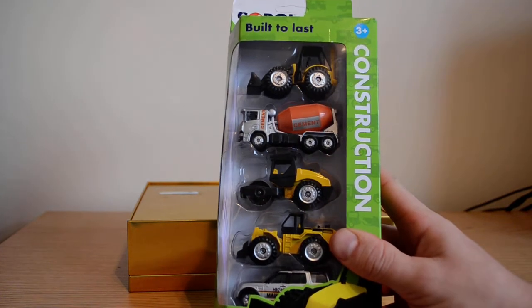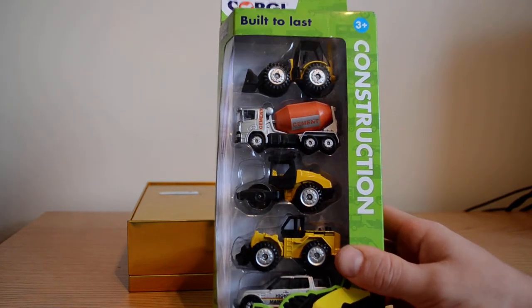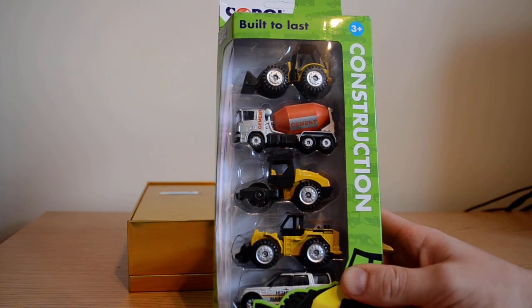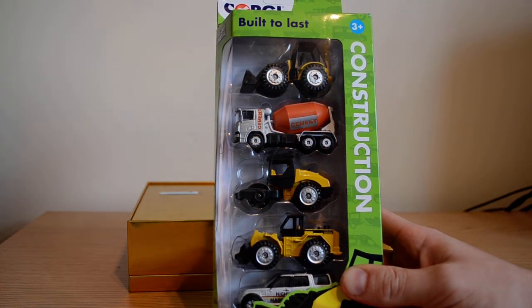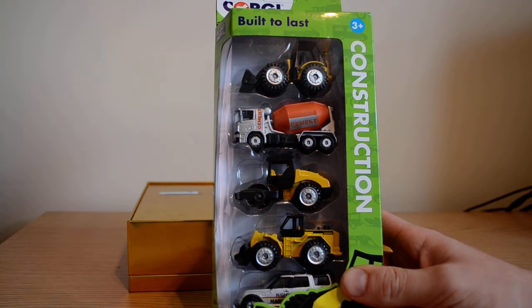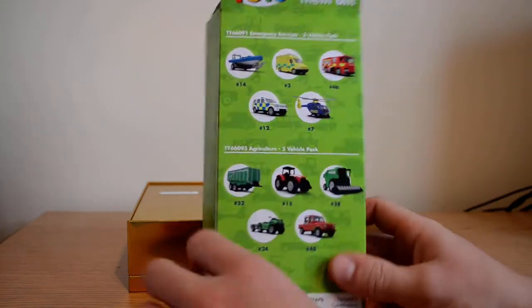Hey guys, here we have the Corgi Built to Last Construction Set which has five vehicles inside, ideal for any sort of play set or play mat.